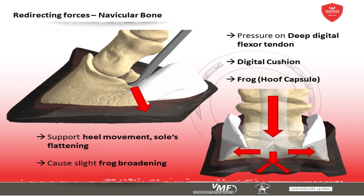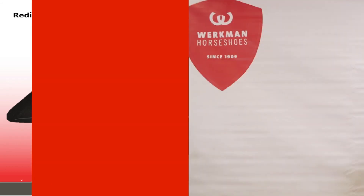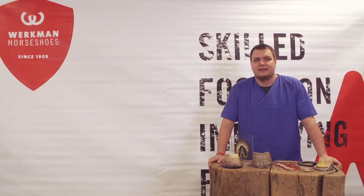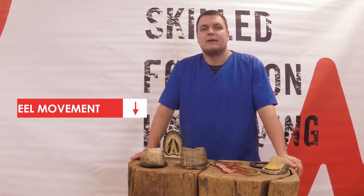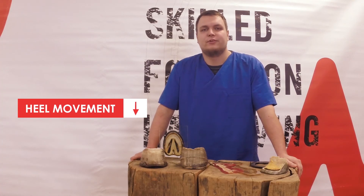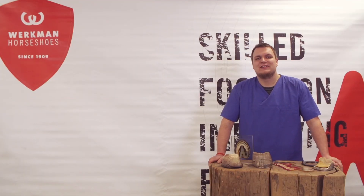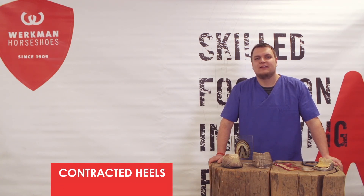As soon as the load ceases as the horse starts to break over and the limb leaves the ground, the hoof will come back to its original shape. To avoid interference with this mechanism, we refrain from nailing this area of the shoe to the hoof capsule. Nevertheless, certain modified horseshoes, such as the Eggbar shoe, can affect the hoof mechanism by prohibiting the heel movement to a certain degree. A prolonged treatment with these kinds of shoes or any other kind of fixation of the heels can lead to contracted heels and cause severe lameness in horses.